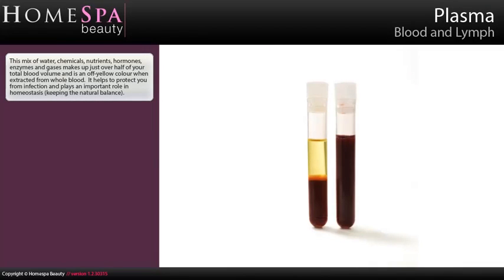Plasma. This mix of water, chemicals, nutrients, hormones, enzymes and gases makes up just over half of your total blood volume and is an off-yellow colour when extracted from whole blood. It helps to protect you from infection and plays an important role in homeostasis, keeping the natural balance.